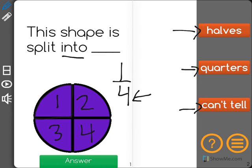Now we have a shape that is split into four equal pieces we could either call it one-fourth or one-quarter.